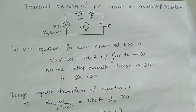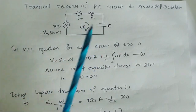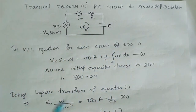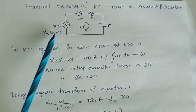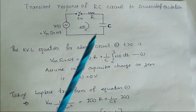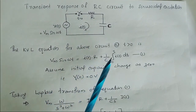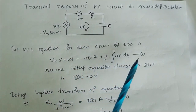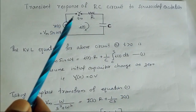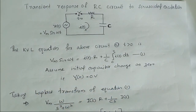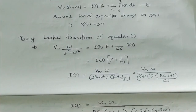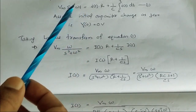The KVL equation for this circuit at t > 0 is: Vm·sin(ωt) = R·I(t) + (1/C)·∫₀ᵗ I(t) dt — let this be equation number one. Initially the switch was in open condition, so we assume initial capacitor charge as zero, that is Vc(0) = 0 volts. Now we can take the Laplace transform of this equation.